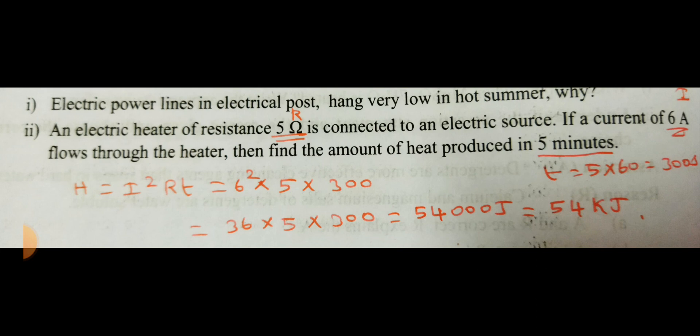So H is equal to I squared RT. So 6 squared into 5 into 300. So 36 into 5 into 300, 54,000 joule. So 54 kilo joule.